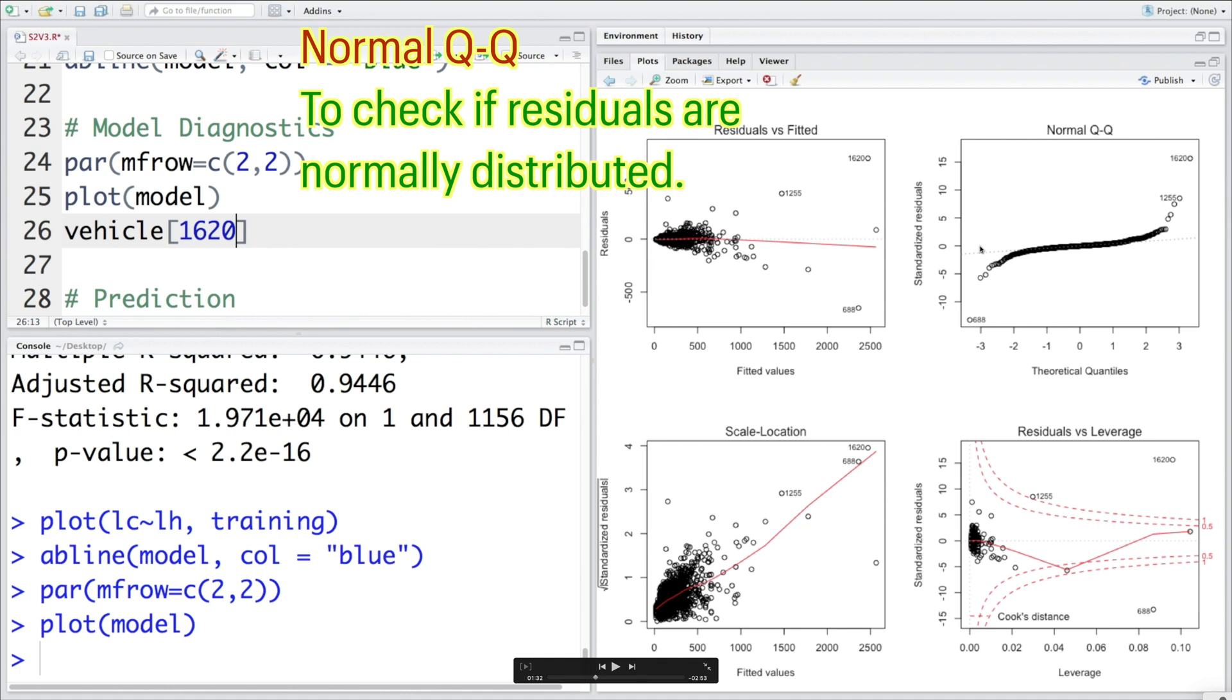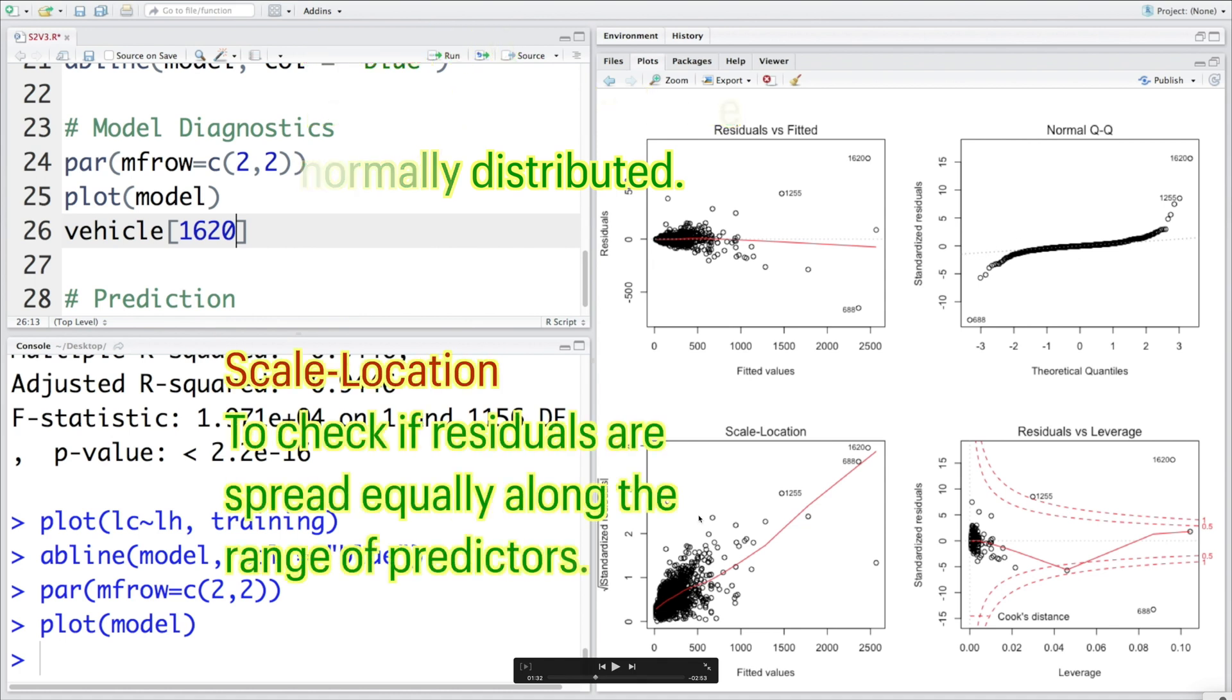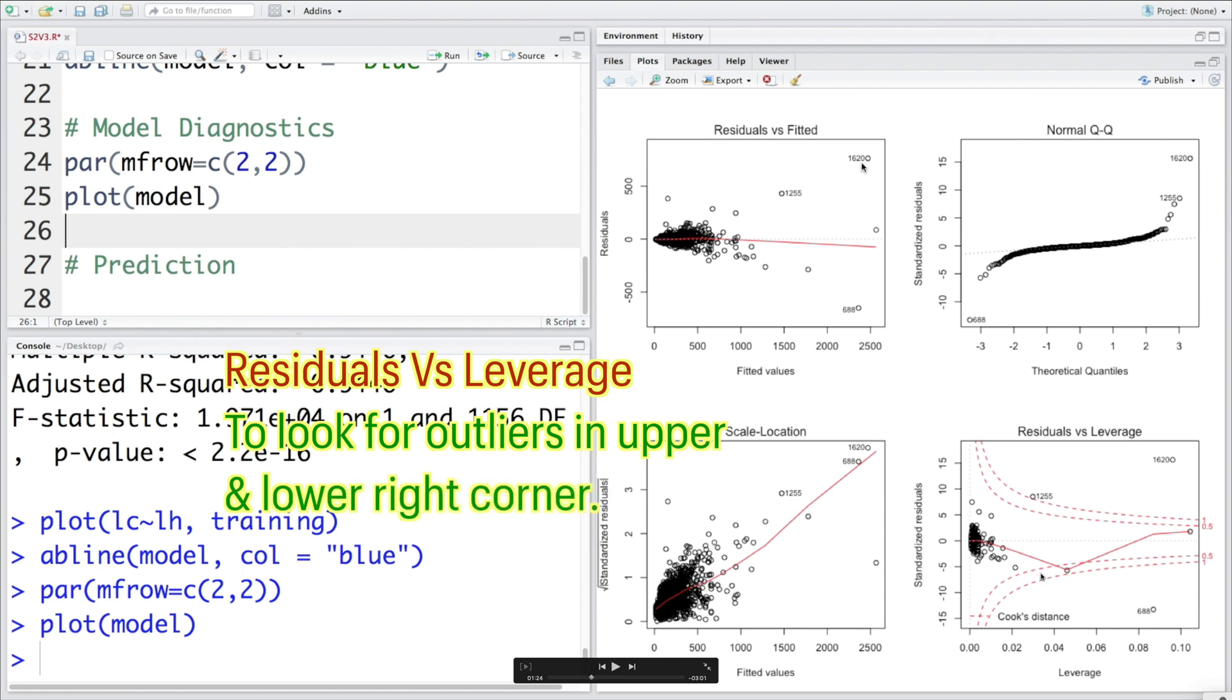Scale location plot has fitted values on the x-axis. The main purpose of this plot is to check if the residuals are spread equally along various values of predictors. It helps us to check the assumption of equal variance, also called homoscedasticity.